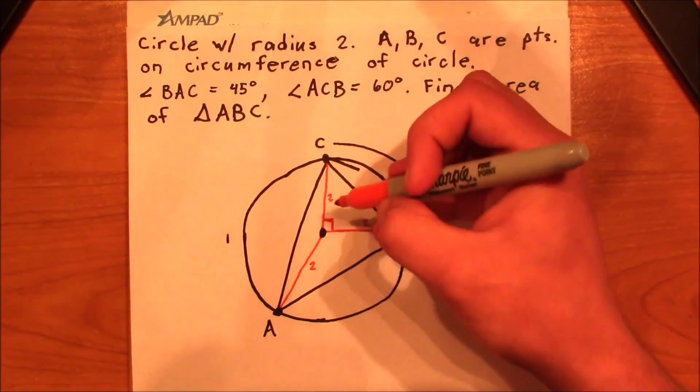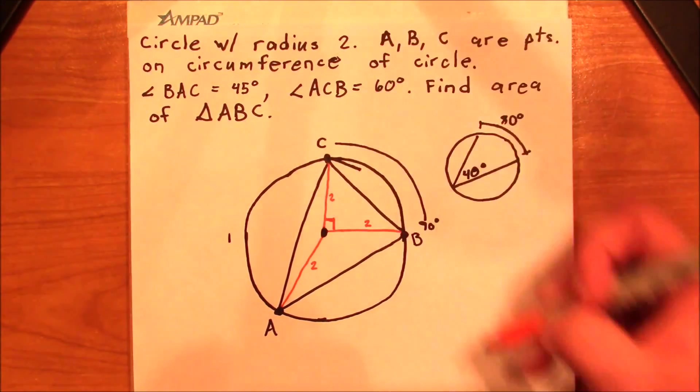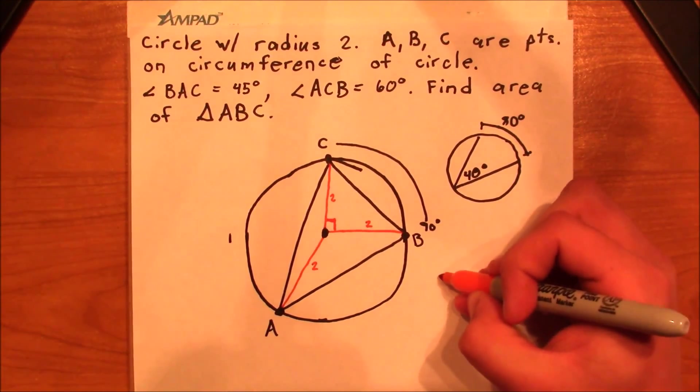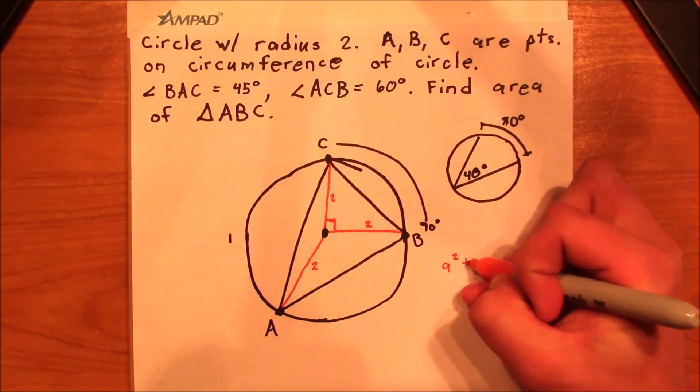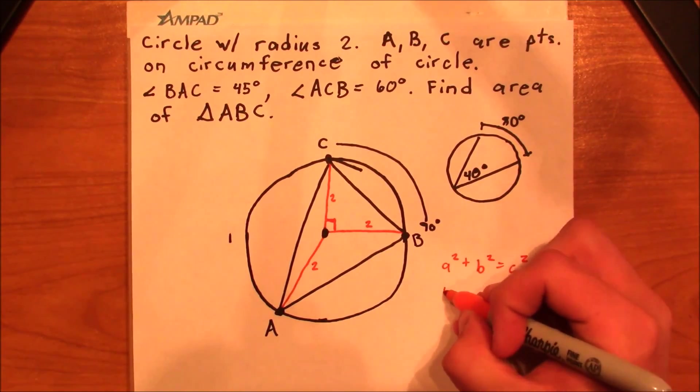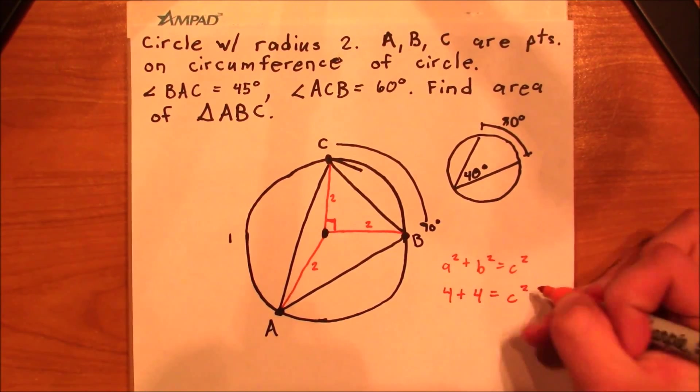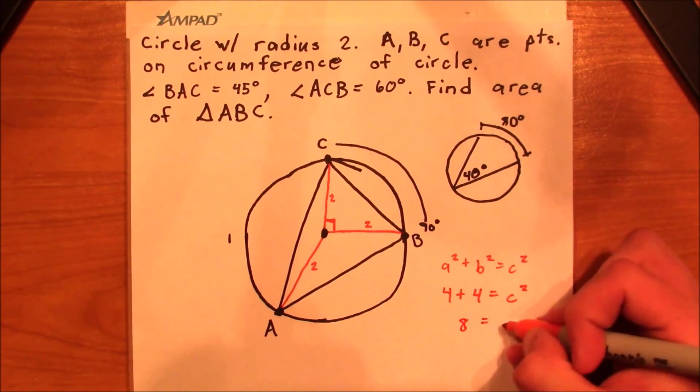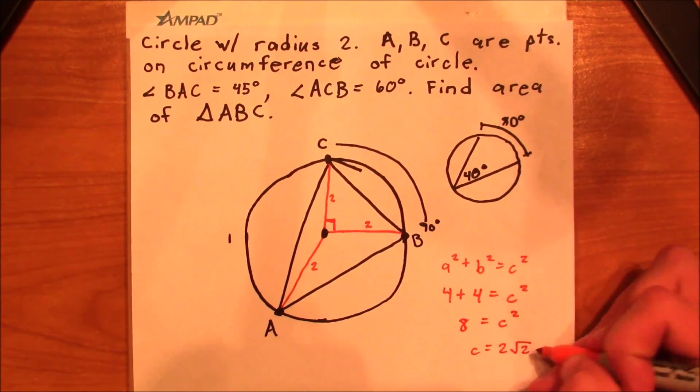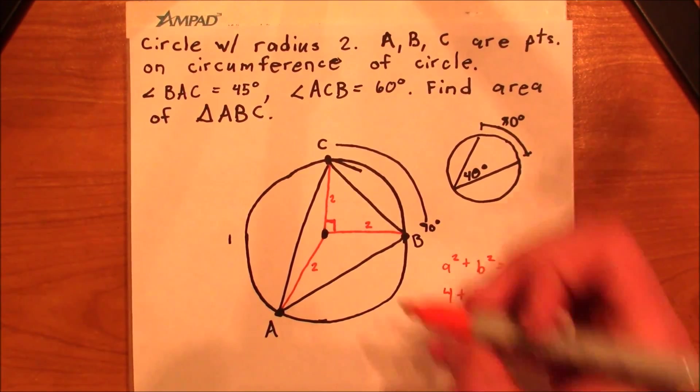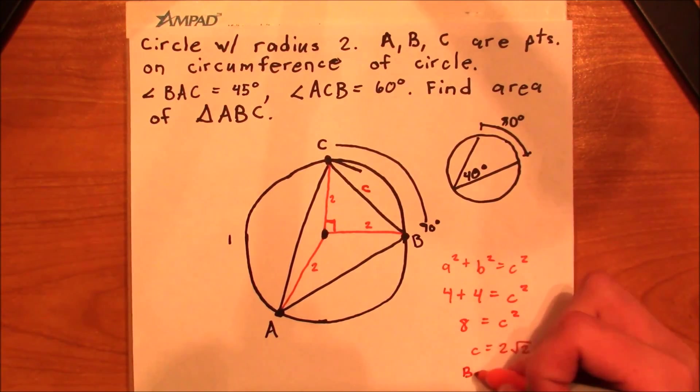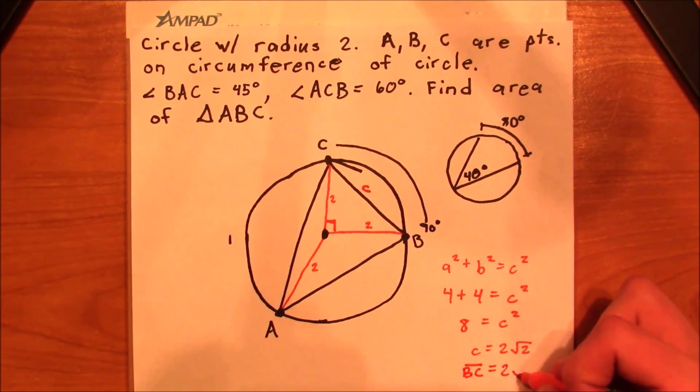And so we know that in order to calculate the third length, we can just use Pythagorean's theorem and say that this is going to be a squared plus b squared equals c squared. And so we would have 4 plus 4 equals c squared. 8 equals c squared. And then c equals 2 root 2. So this c right here is really just this, and so I'm just going to rename that as BC. And this is equal to 2 root 2.